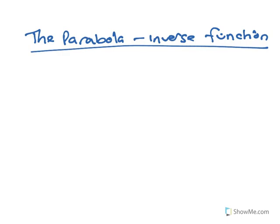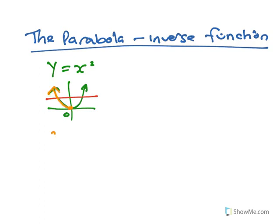To find the inverse function, if you have a parabola — say y equals x squared — this will not have an inverse because it does not pass the horizontal line test. So you need to restrict the domain so that it will have an inverse. We're going to restrict the domain so x is less than or equal to 0. Looking at this curve for x less than or equal to 0, the range would be y greater than or equal to 0.